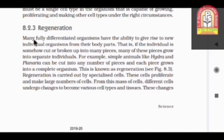Many fully differentiated organisms have the ability to give rise to new individual organisms from their body parts. That is, if the individual is somehow cut or broken up into many pieces, many of these pieces grow into separate individuals. For example, if one new healthy organism will lose some body parts, then that body parts will itself grow as the separate individuals.